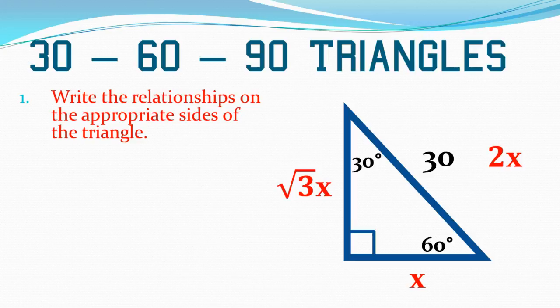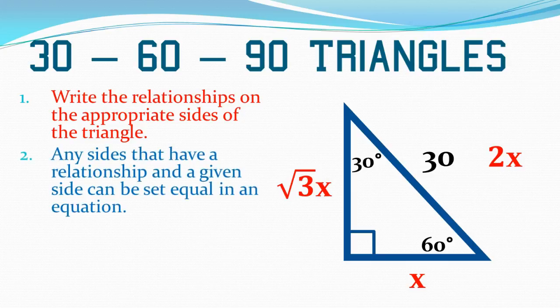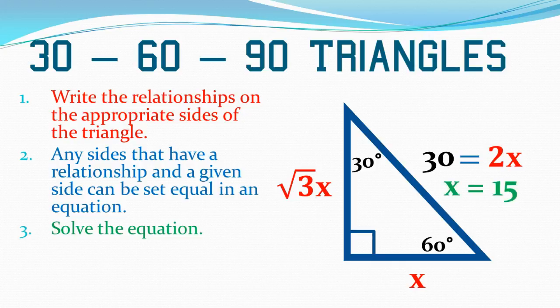Any sides that have a relationship and a given side can be set equal in an equation. In this case, only one of my sides of my triangle has a given value and a relationship. In this case, that's the hypotenuse. The hypotenuse is measured at 30, and that relationship for the hypotenuse of a 30-60-90 triangle is 2x. So I'm going to set those two equal to one another. That creates a nice, easy, one-step equation. I'm going to solve this equation. What's happening to my variable? I'm multiplying by 2. To undo that, I need to divide both sides by 2. x equals 15.